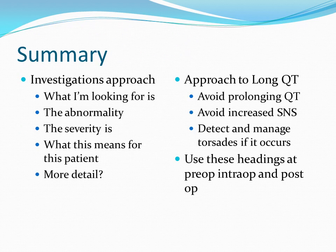The main takeaways from this podcast are: an alternative approach to investigations that focuses on what you're looking for, what the abnormality is, and what it means for the patient. Also, having an approach to long QT that focuses on avoiding prolonging QT, avoiding increased sympathetic drive, and detecting and managing Torsades at pre-op, intra-op, and post-op stages. This approach can be used broadly for any patient with a potential malignant arrhythmia, including trifascicular block, Wolff-Parkinson-White, history of ventricular tachycardia, or atrial fibrillation — adapted to reduce arrhythmia triggers, avoid arrhythmia-specific precipitants, enable early detection, and manage the rhythm when it occurs.